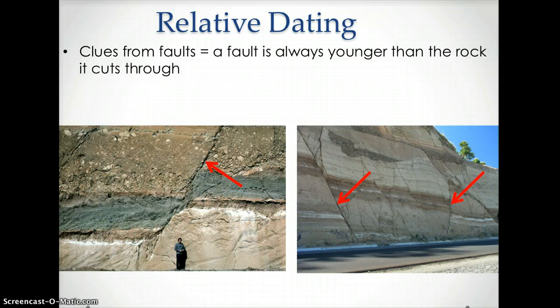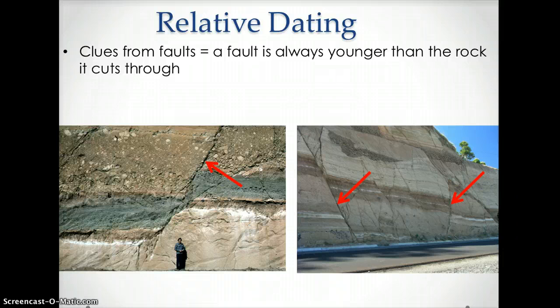Clues from faults can also help scientists to date the rock. A fault is always younger than the rock it cuts through. If the rock it cuts through did not exist, then how could a fault cut through it? The red arrow in the image points to the faults.